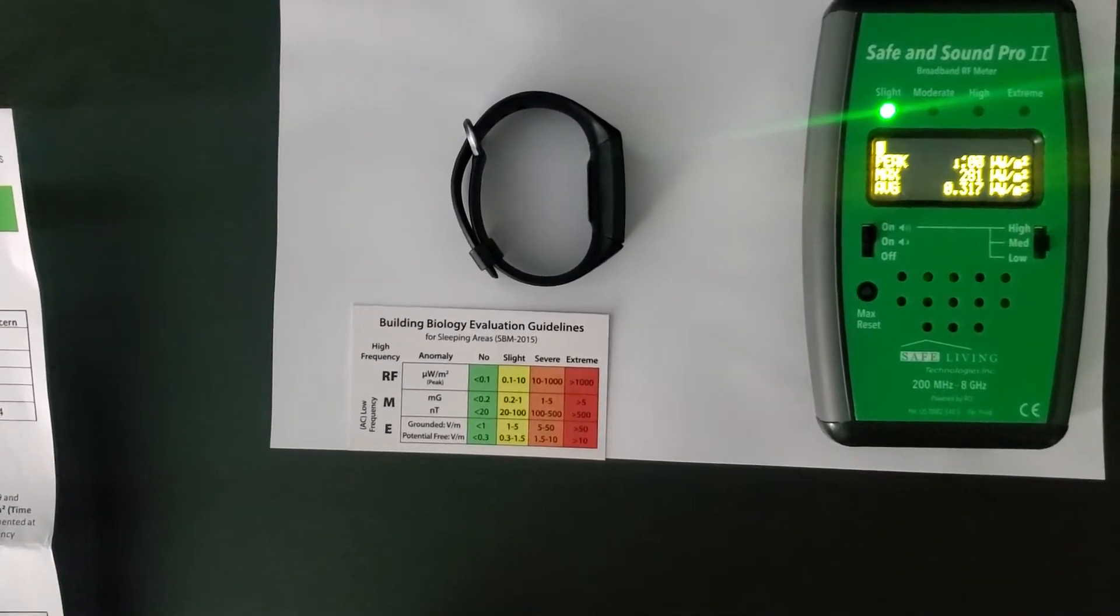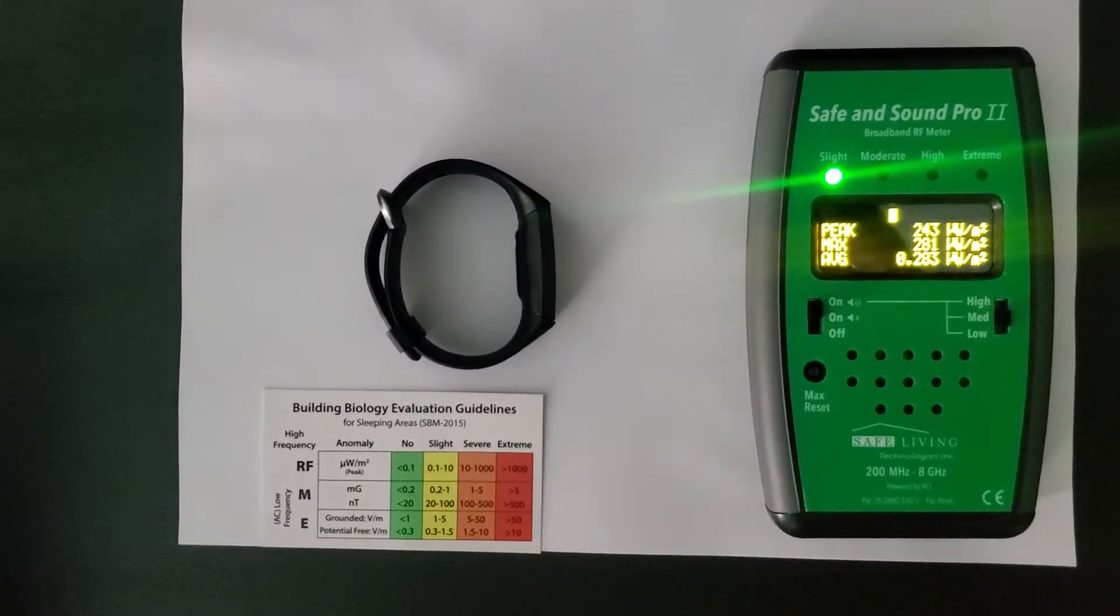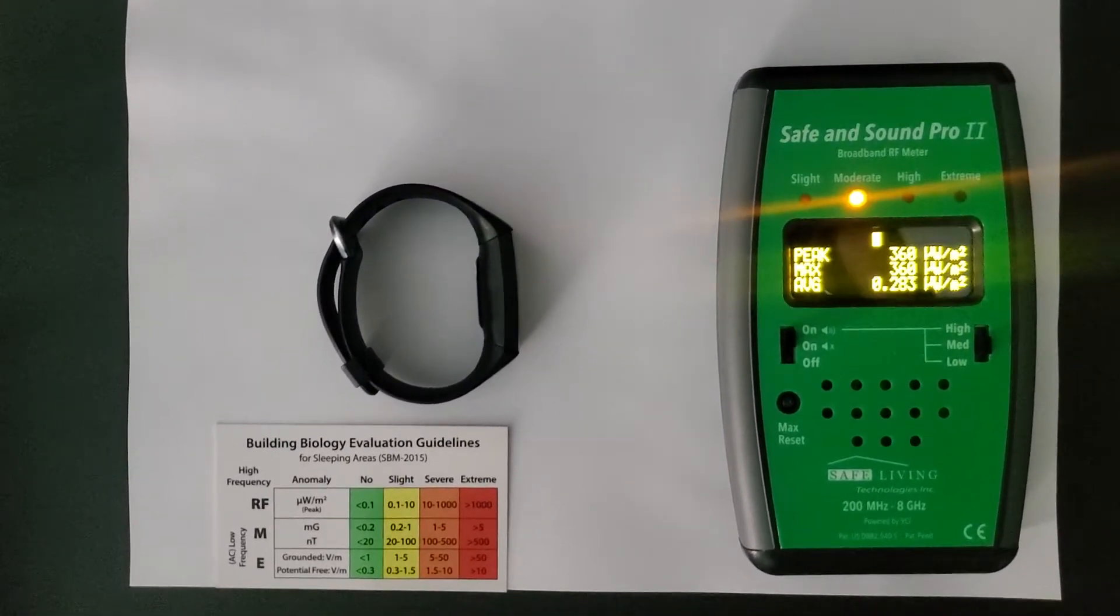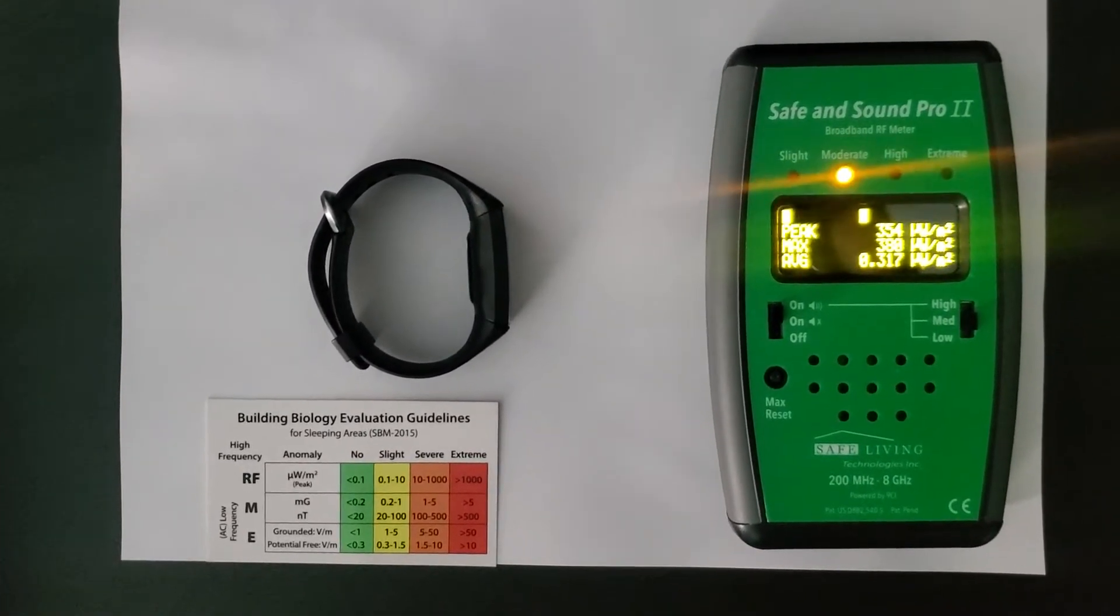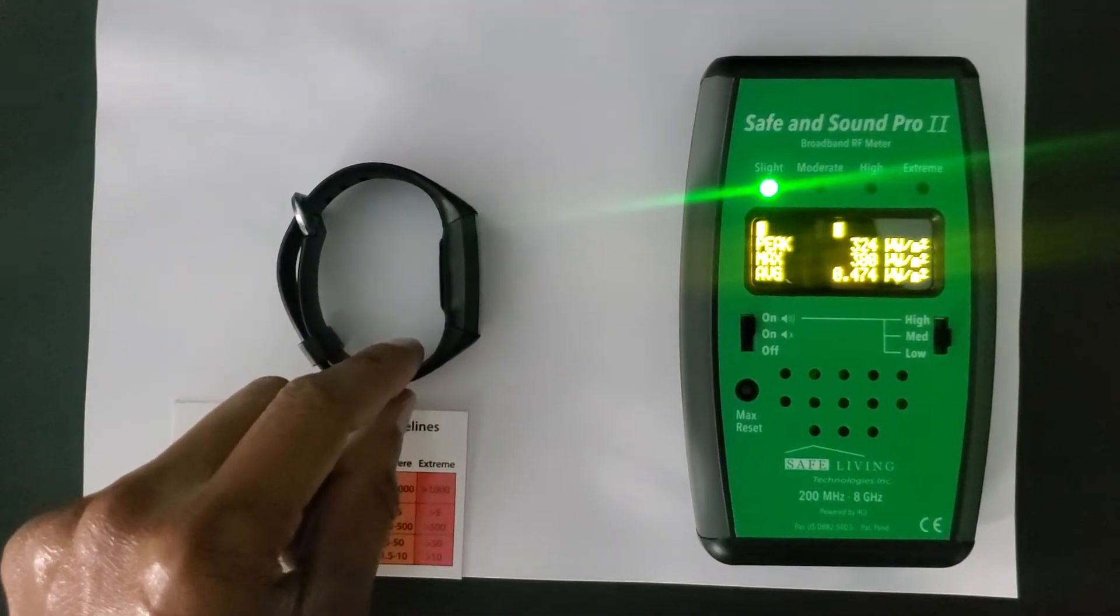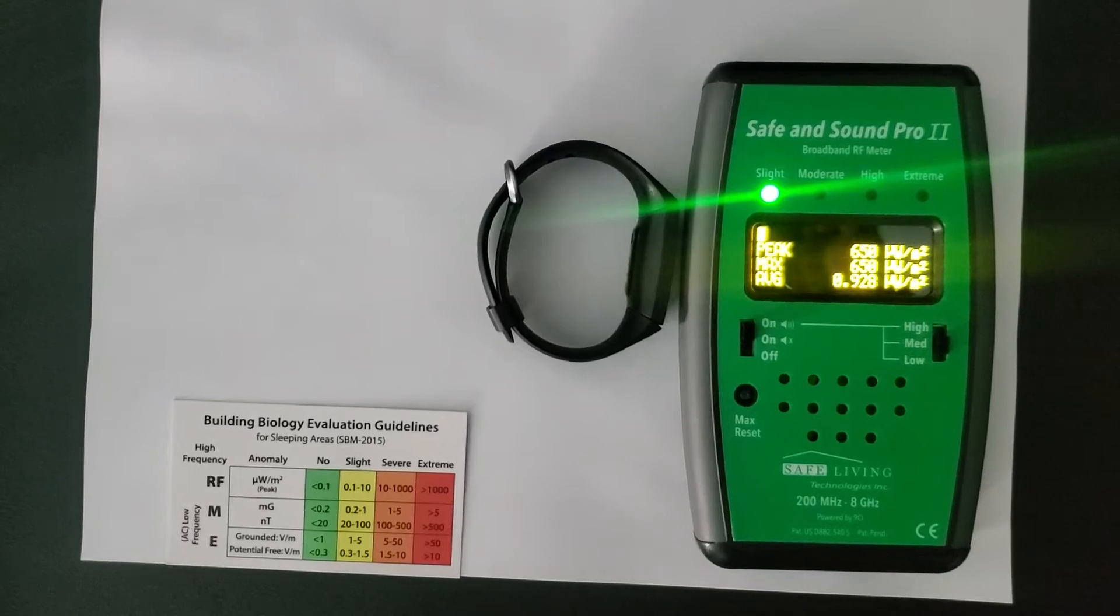The BioInitiative report recommends microwatts per meter square below 6. Generally, I want to be in a room that's below 10. And this device is right now giving us hundreds. So as we move it closer it's giving us 700.